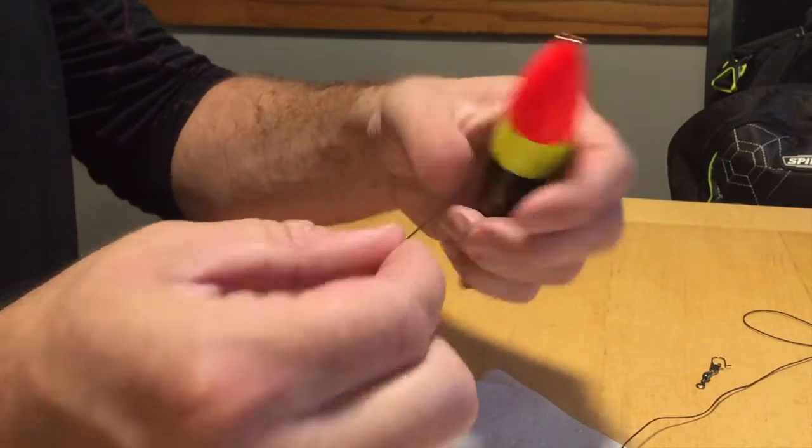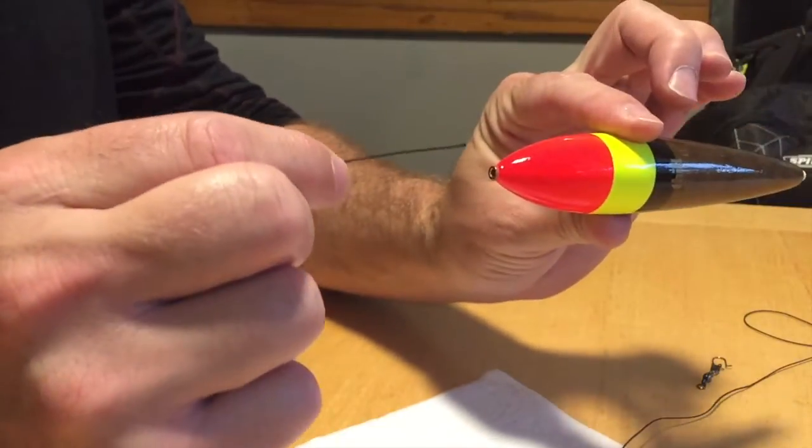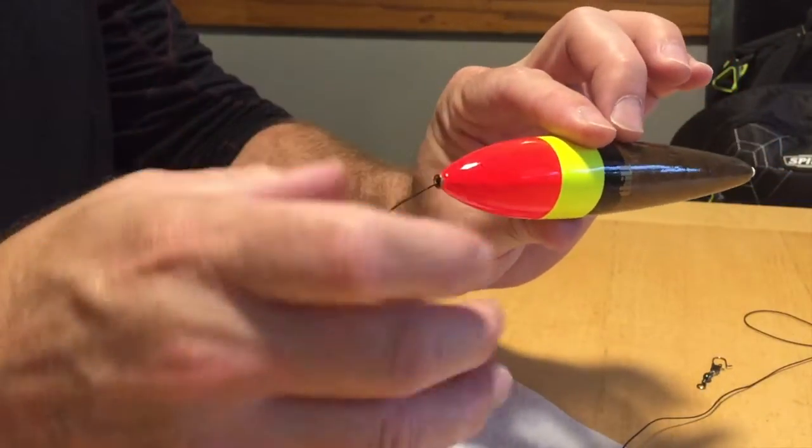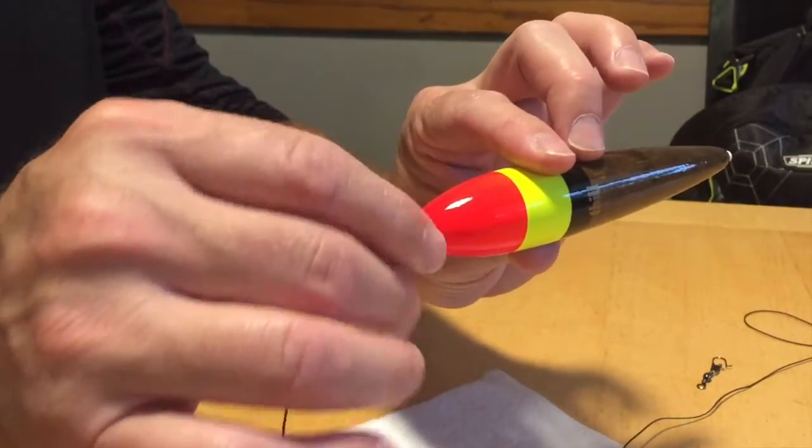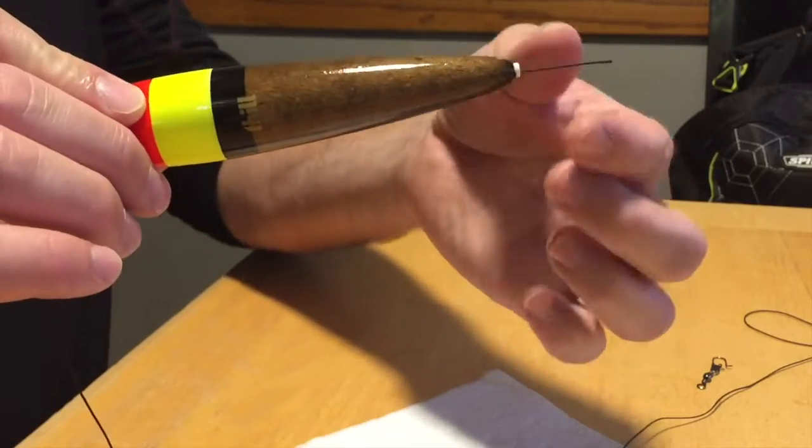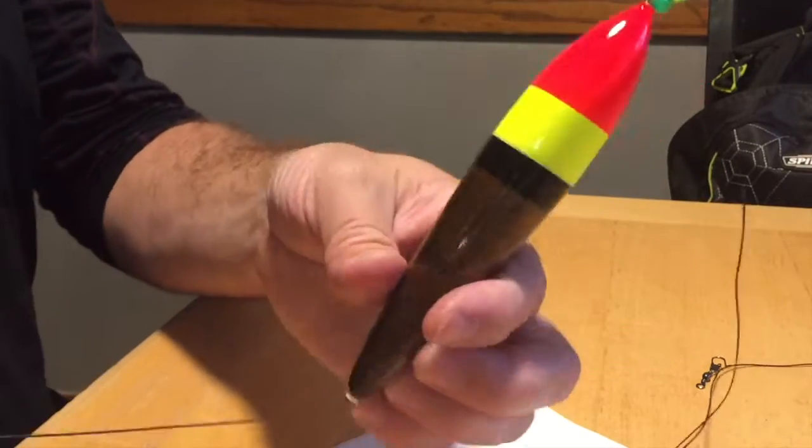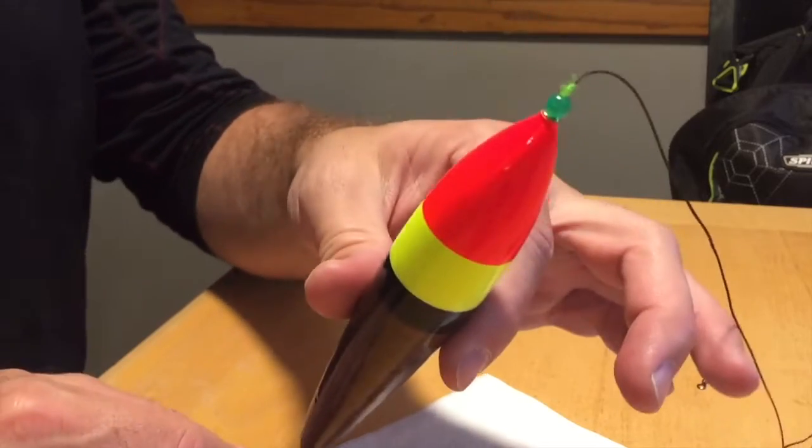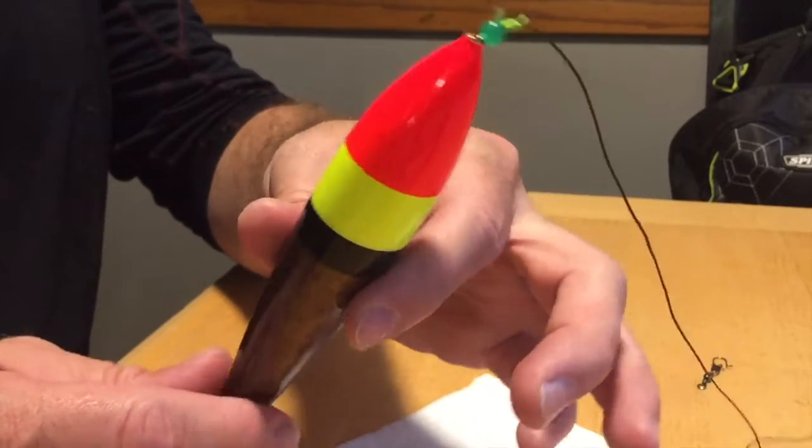So what you do next is you feed the line through the top of the bobber until it comes out the other end. And then the bobber will stop at the bead, and the bead stops at the tie.